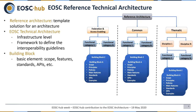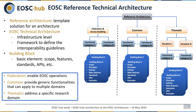Starting from this, we decided to develop the EOSC reference technical architecture as the framework and container for all these technical interoperability guidelines. A reference architecture is a template solution at the architecture level, and we decided to work at the infrastructure level. We split EOSC services into three main categories: federation services, which are the services to enable EOSC operation; common services, which provide generic functionality applicable to multiple domains such as a cloud orchestrator or data repository; and thematic services, which address a specific research domain.